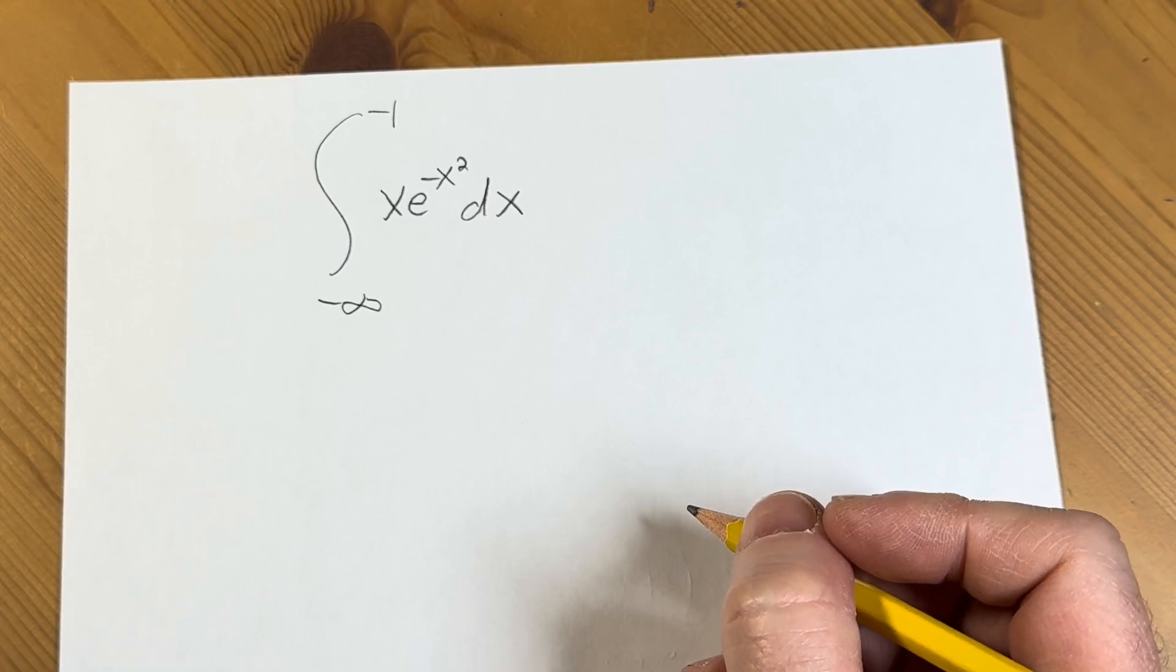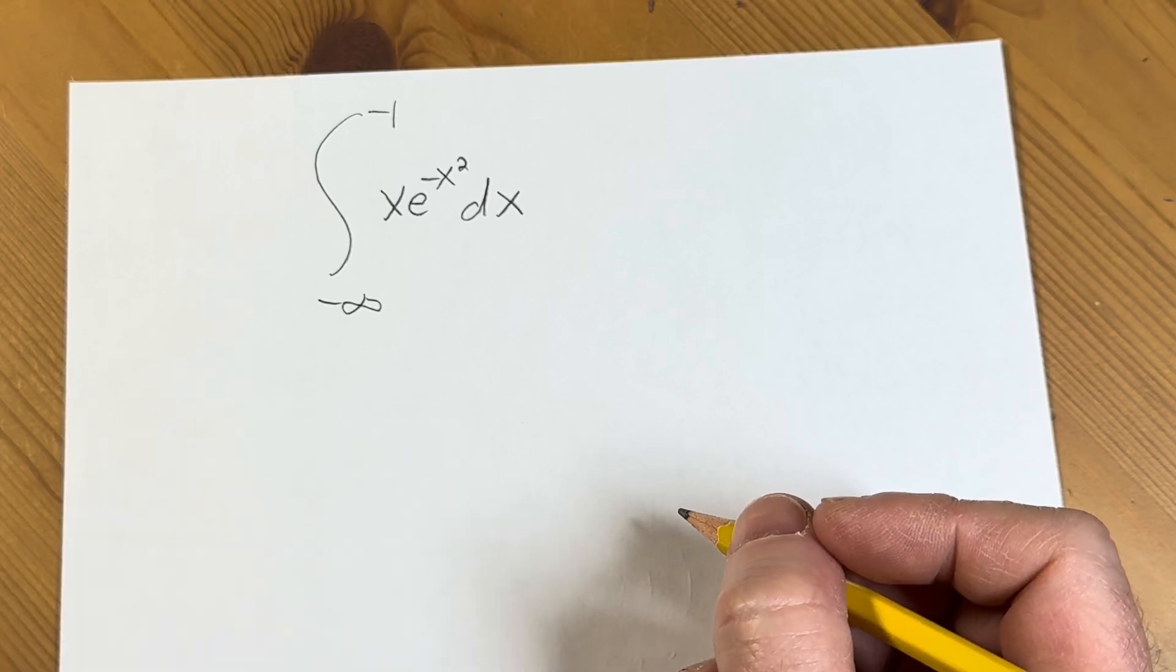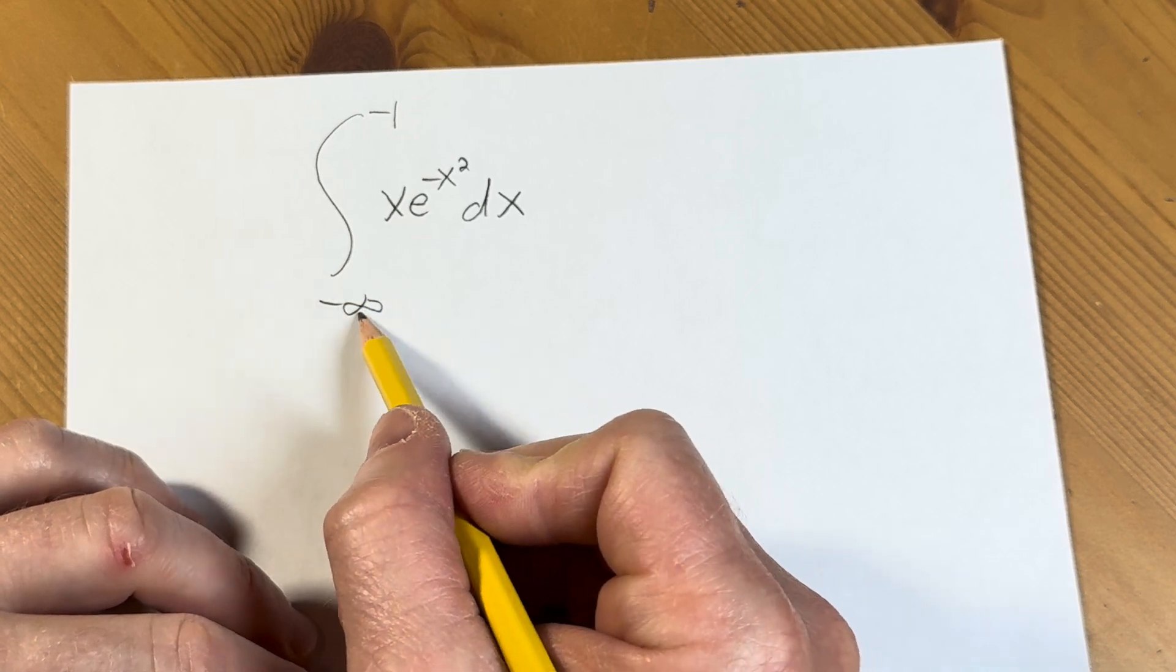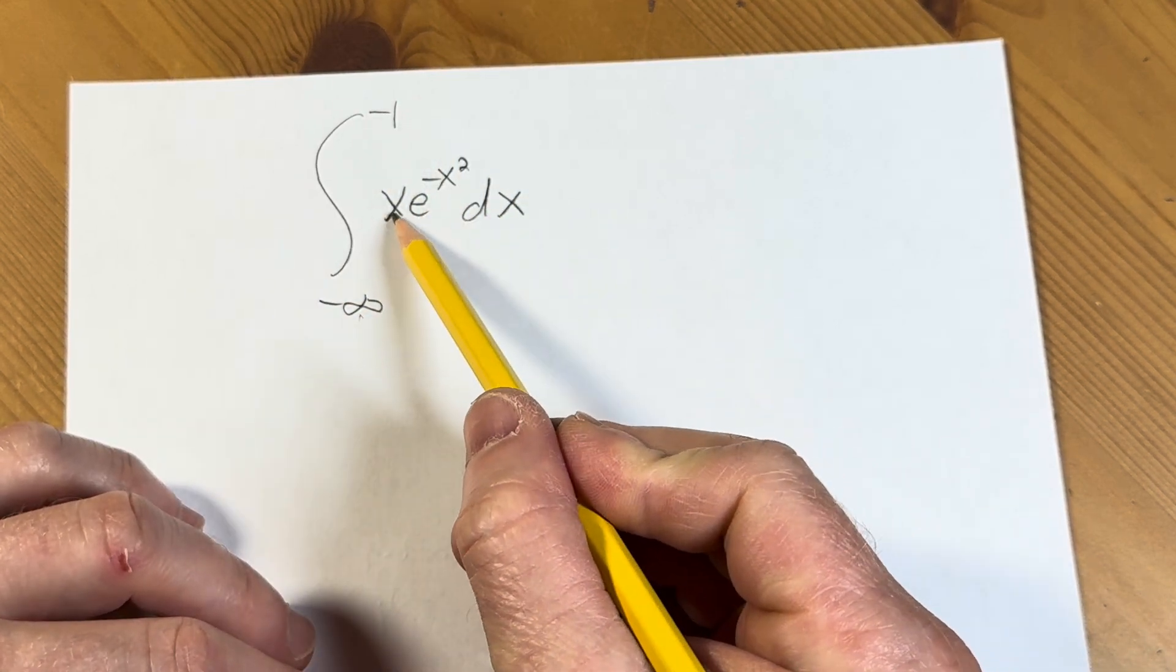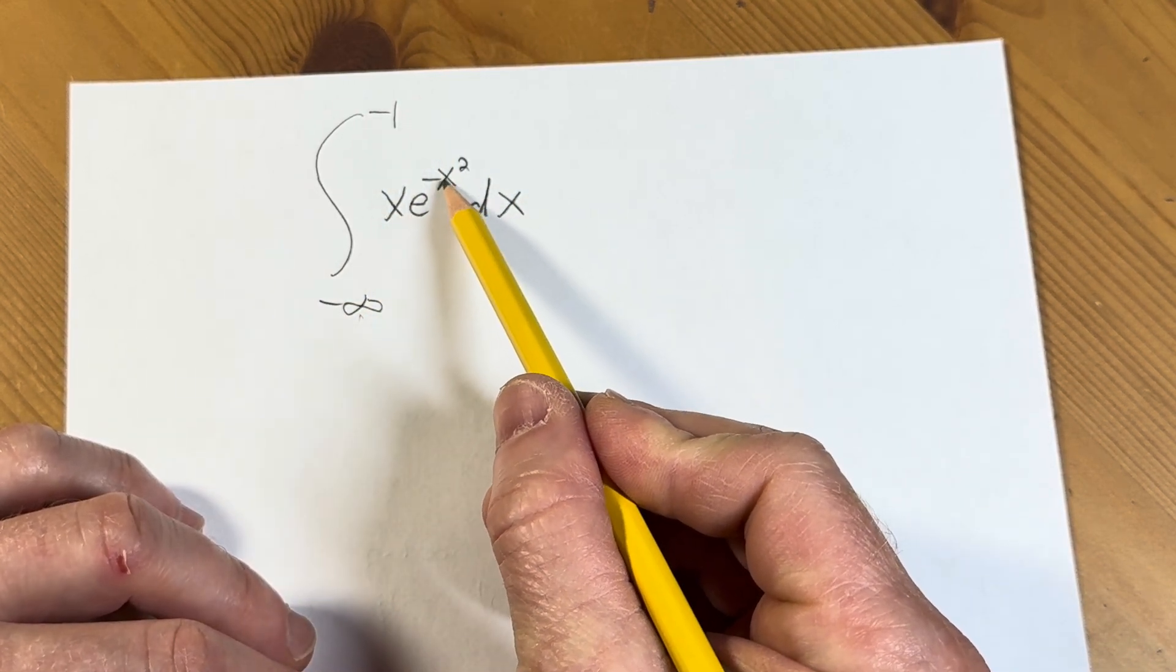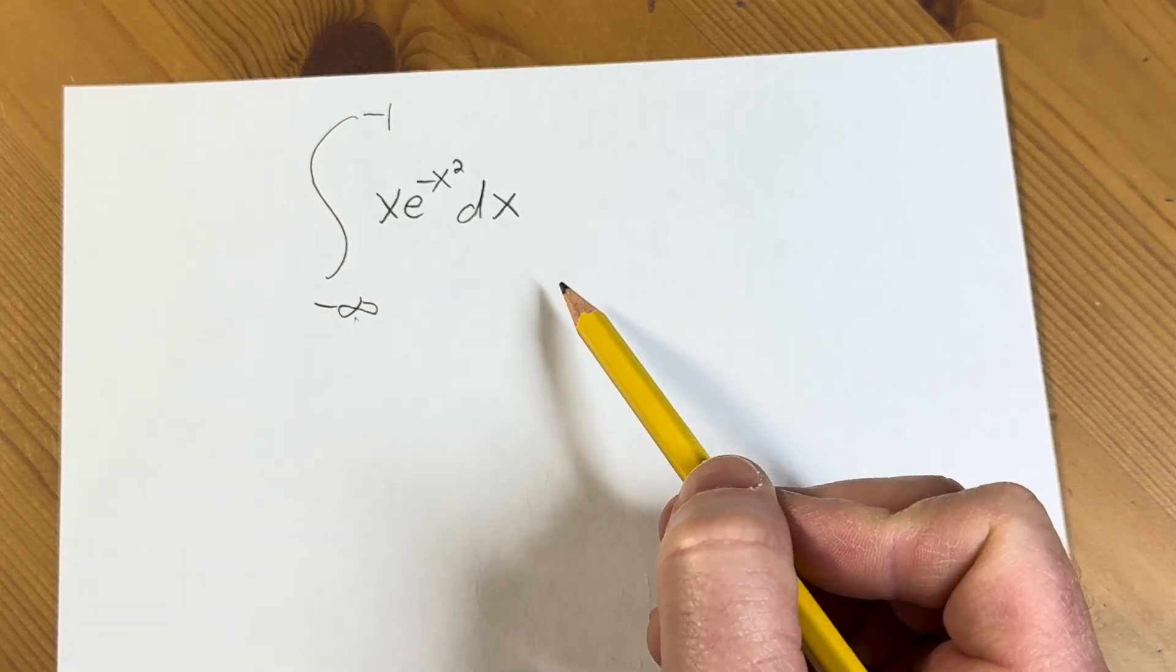Hi, in this video we are going to work out this improper integral. We have the improper integral from negative infinity to negative 1 of x times e to the negative x squared, all with respect to x.